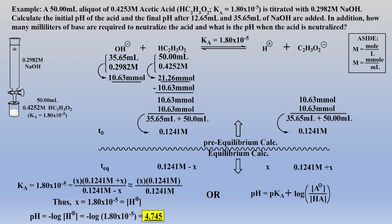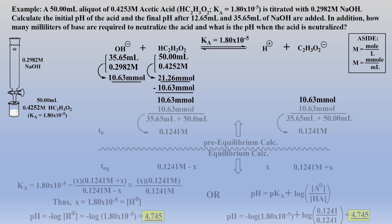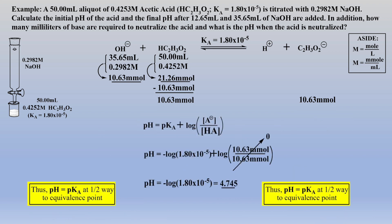Alternatively, one could use the Henderson-Hasselbalch equation — the Ka, initial concentration of conjugate base, and initial concentration of acid are all known — which gives a resulting pH of 4.745, but again, this is a lot more work. Clearly, this is a much easier problem when one recognizes that the pH is equal to the pKa of the weak acid when halfway to the equivalence point, or equivalently, when mMol of acid equals mMol of conjugate base.